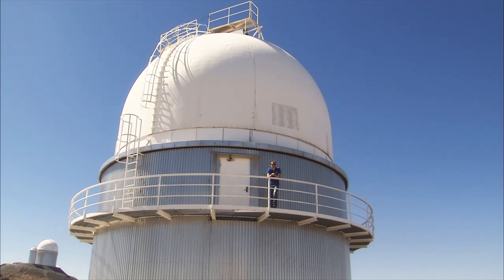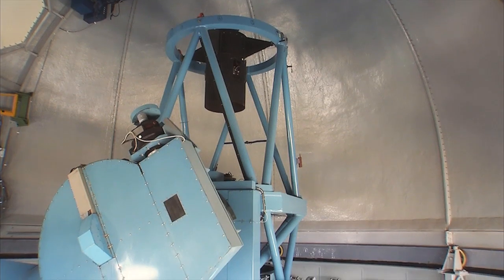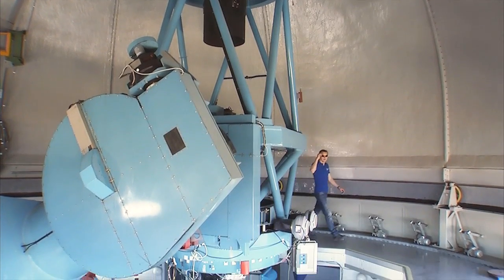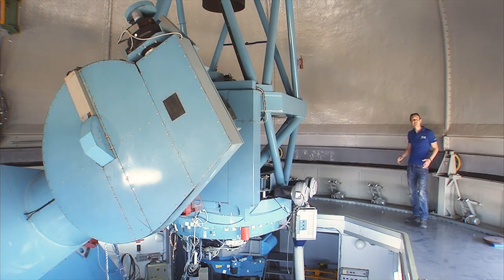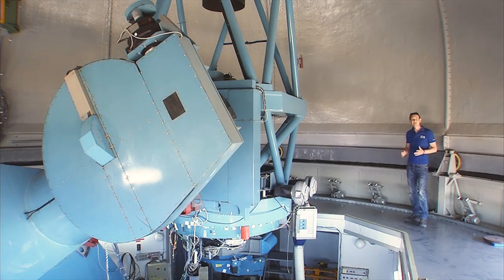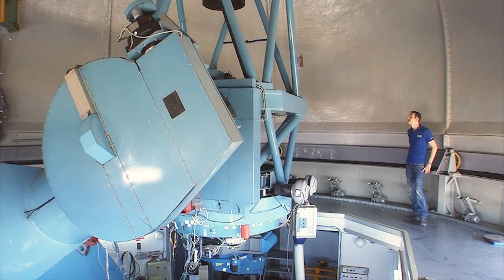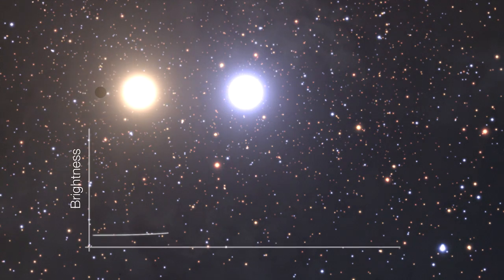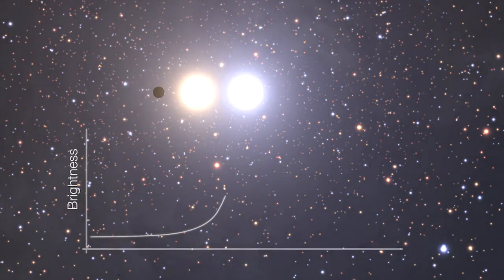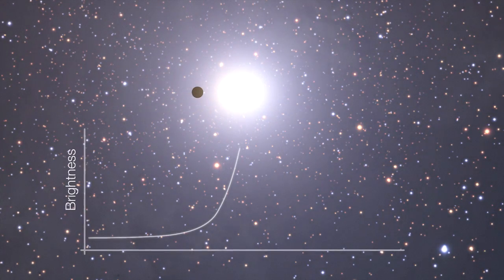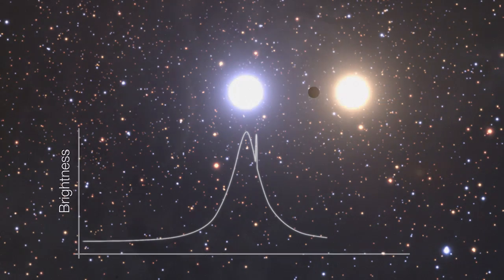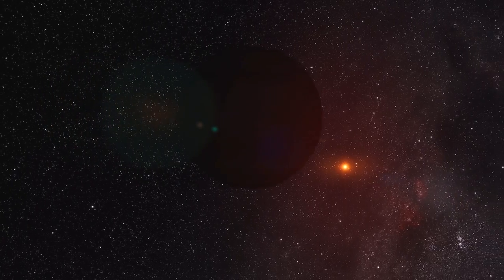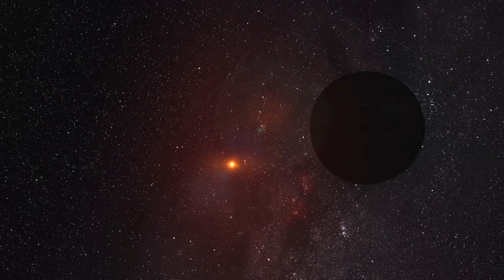But there are other ways to find exoplanets. In 2006, the 1.5-metre Danish telescope helped to discover a distant planet that is just five times more massive than the Earth. The trick? Gravitational microlensing. The planet and its parent star passed in front of a brighter star in the background, magnifying its image.